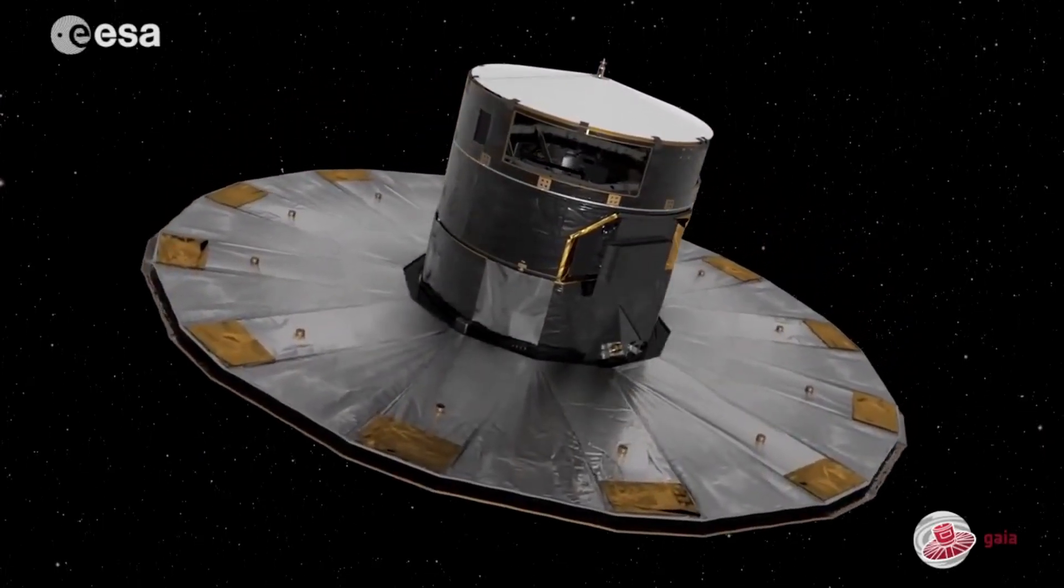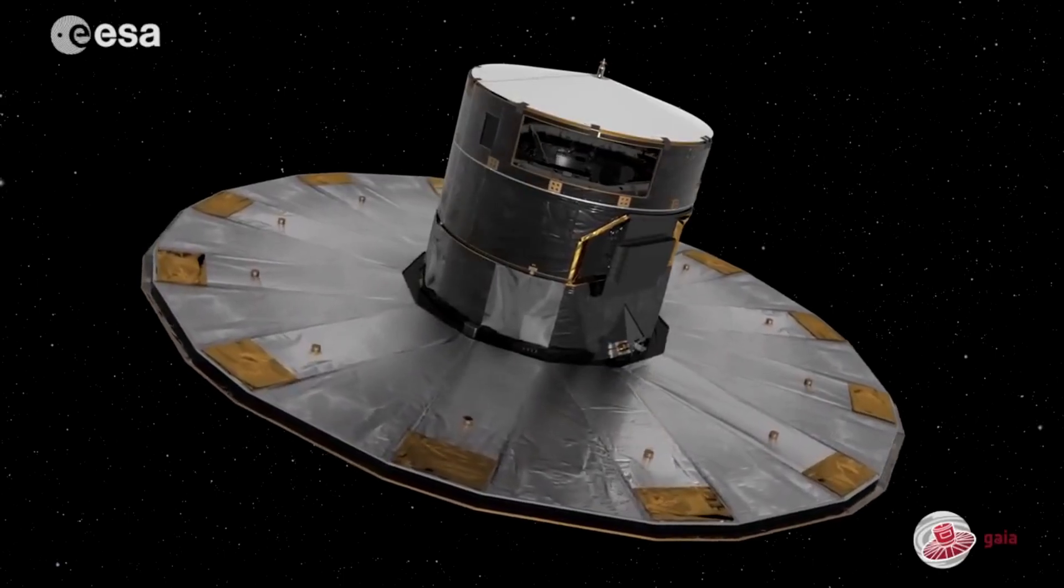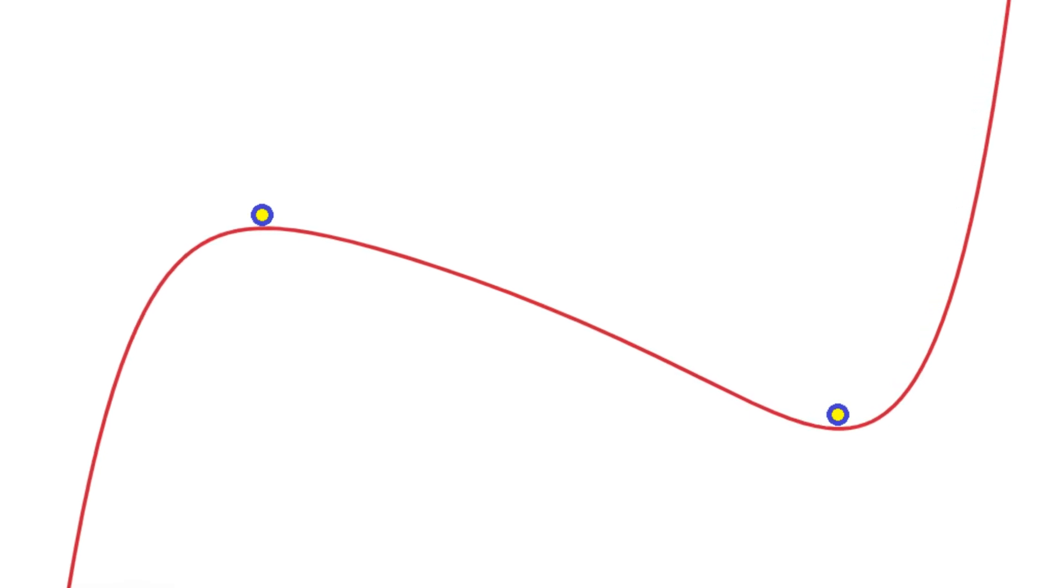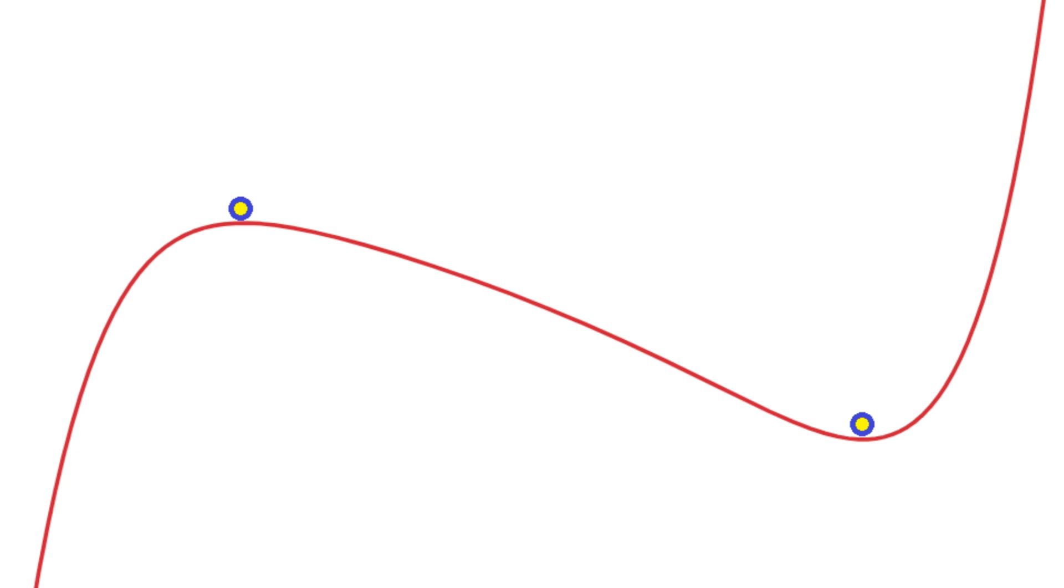In physics, there is a concept of stable and unstable equilibrium. For example, if you have a task to place a ball on a curve so that it does not roll off, formally, the solution on the left is correct. But if you slightly touch the ball, it will roll off. However, if a small force acts on the solution on the right, the ball will quickly return to its original position.